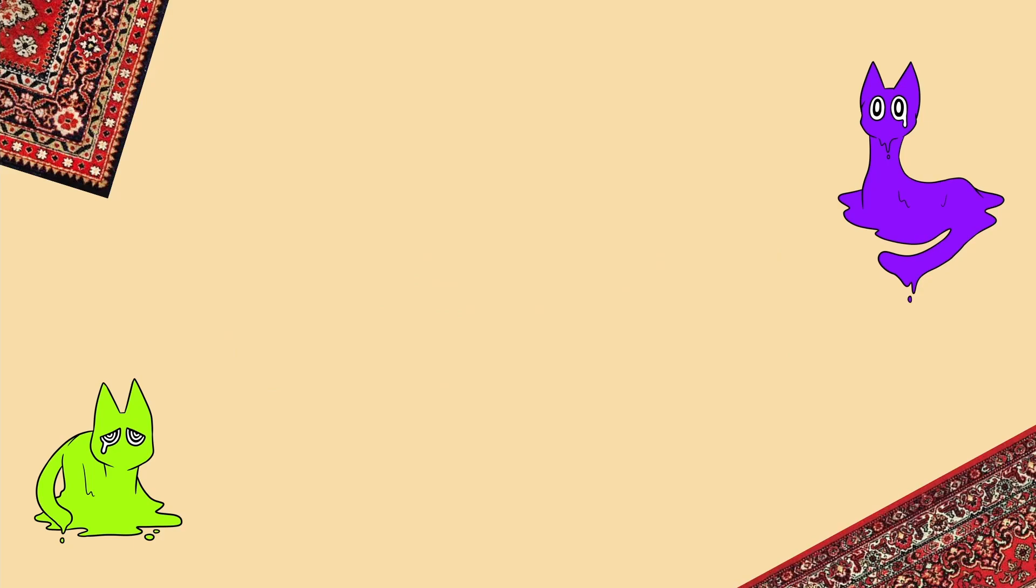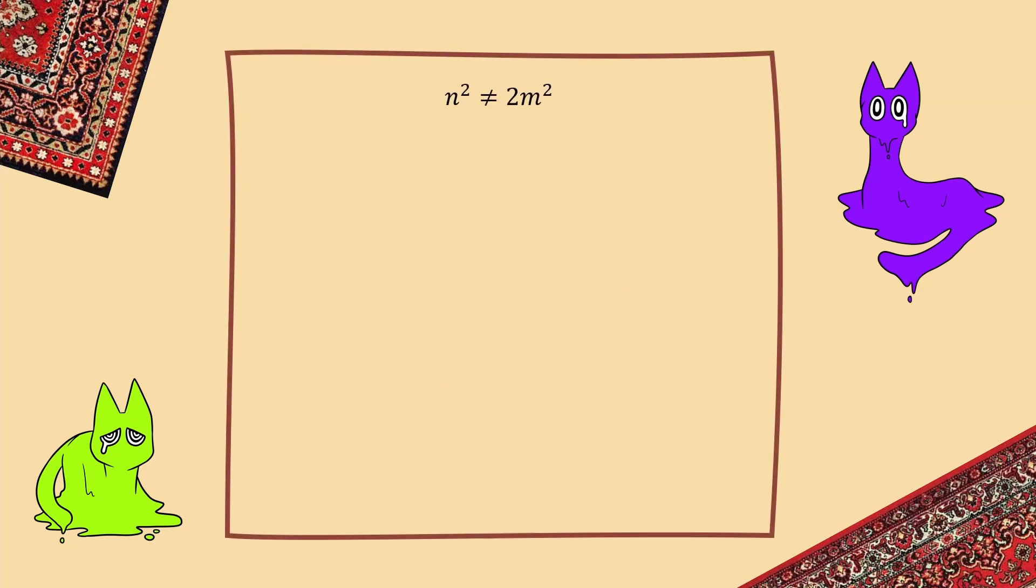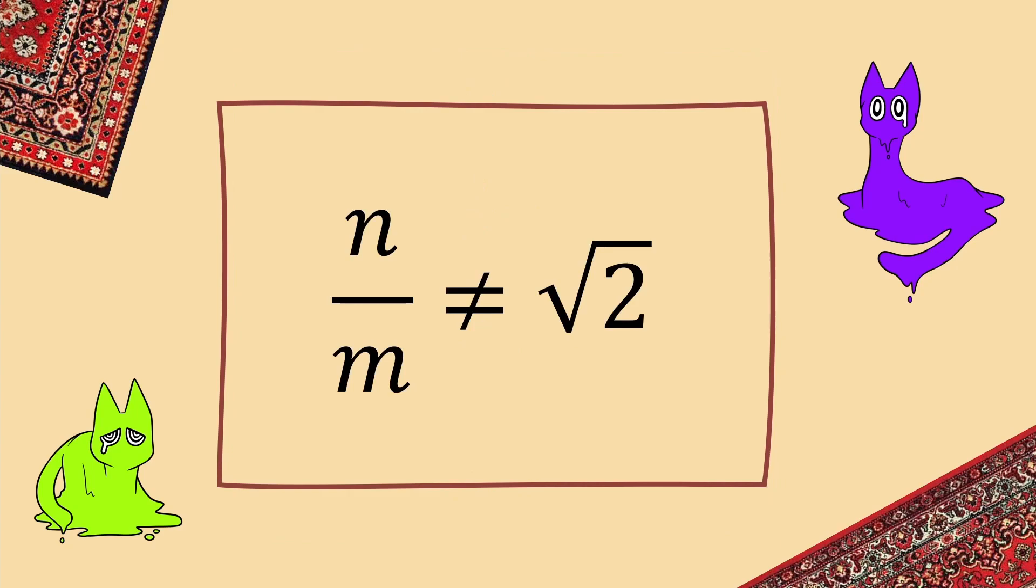But if we turn the handle a little bit, we can get something more out of this. By moving the m squared over to the left, and then square rooting both sides, we can conclude that there is no rational representation of the square root of 2. And this just blew me away when I first came across it, because it's like we accidentally stumbled into one of the most important proofs in mathematics.